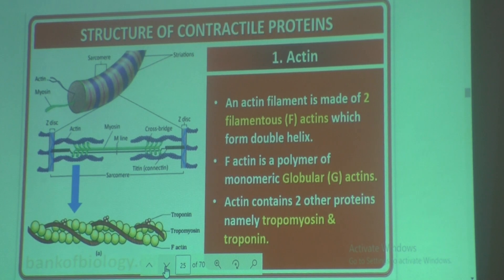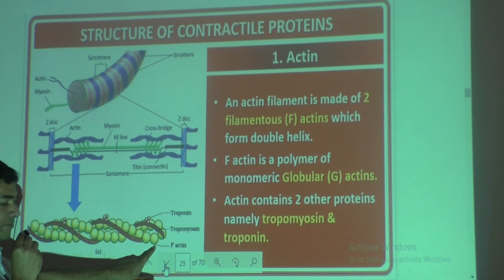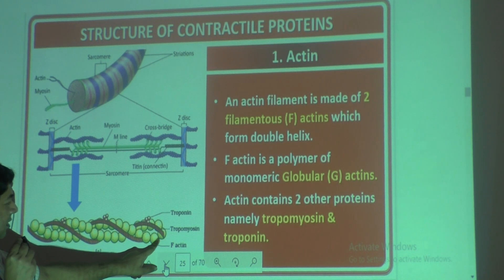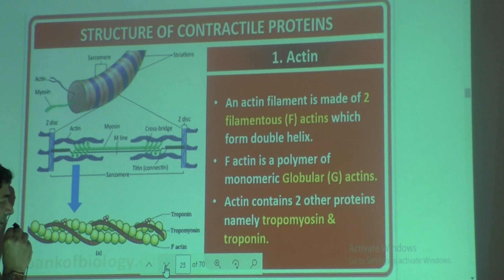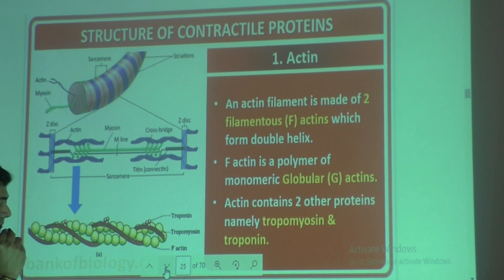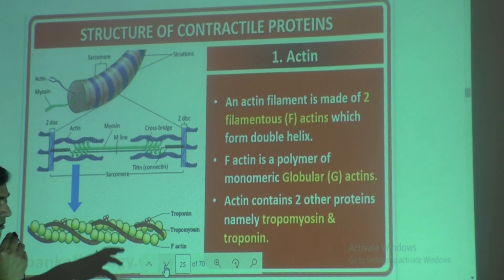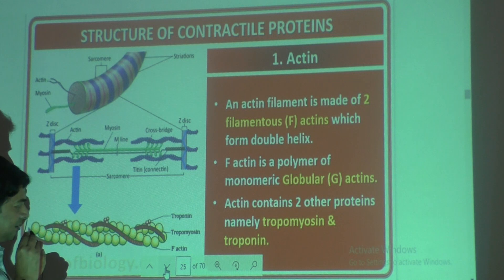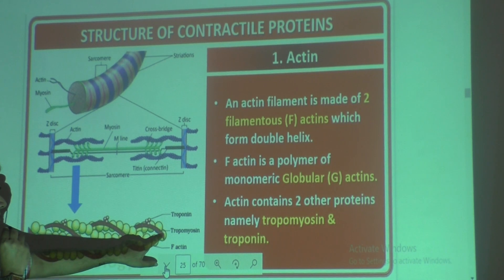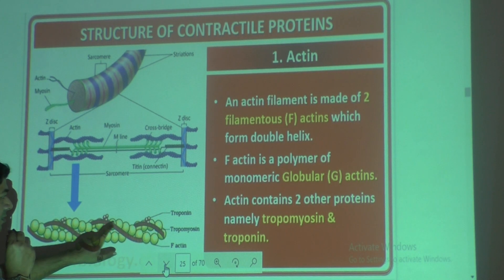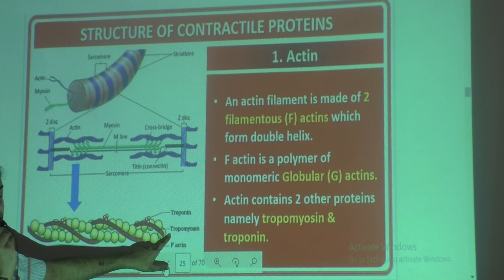Actin will have three parts. The first part is the ball-like structure — the green or yellow color ball-like structures. Many ball-like structures are there and they are called F-actin. F-actin is a monomer — one unit, one ball. Together they form a chain-like structure. Then this rope-like brown color structure is called tropomyosin.